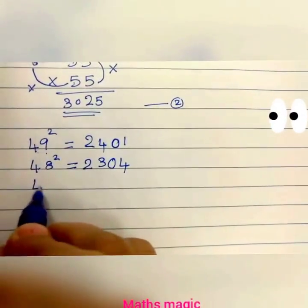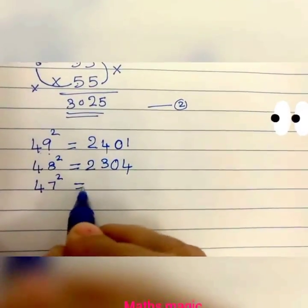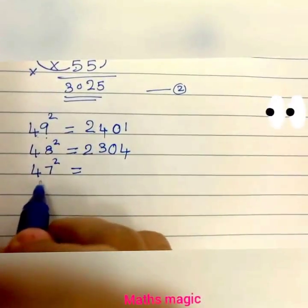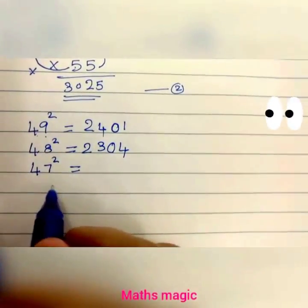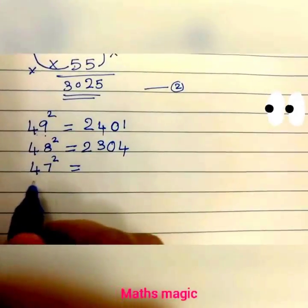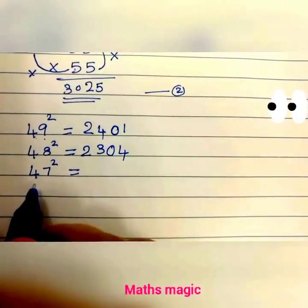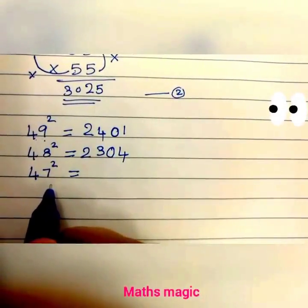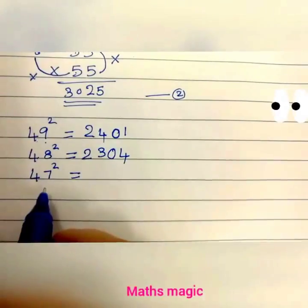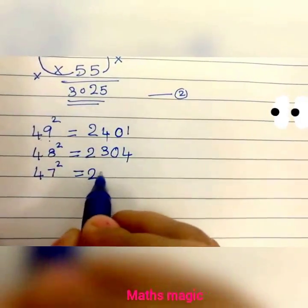For 47 squared: 47 means 50 minus 3. So we subtract 3 from 25: 25 minus 3 is 22. And the square of 3 is 9, written as 2 digits: 09. So 47 squared is 2209.